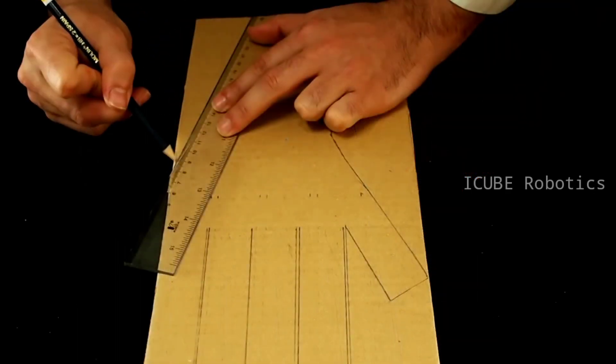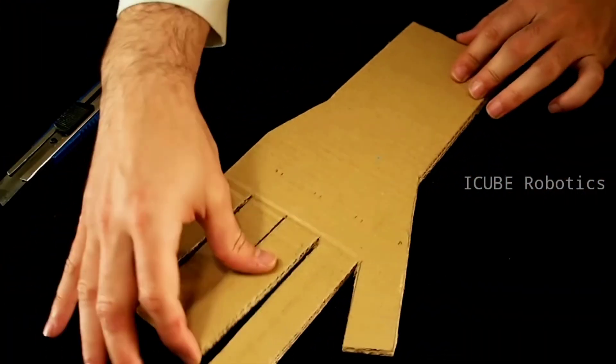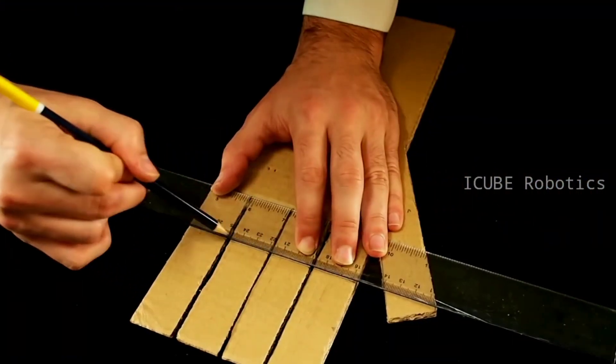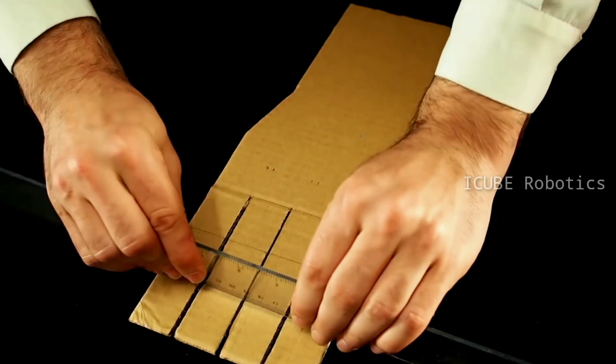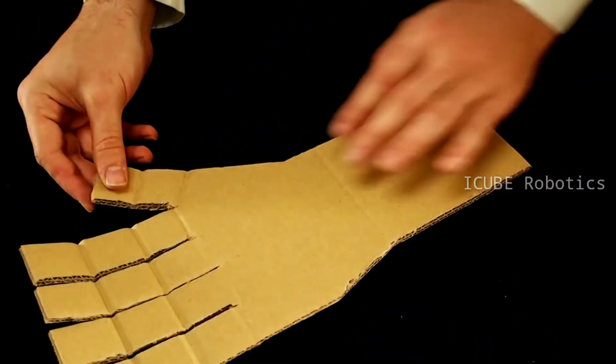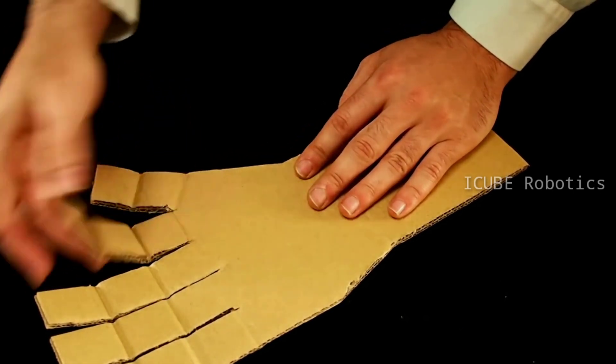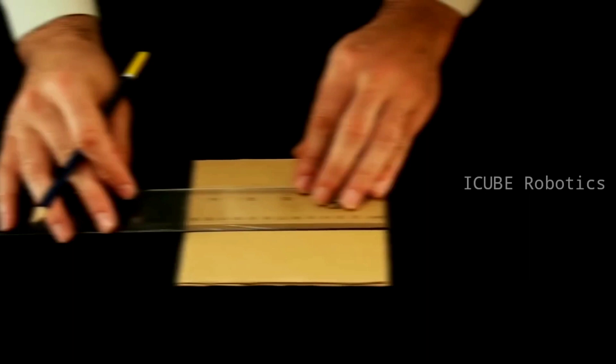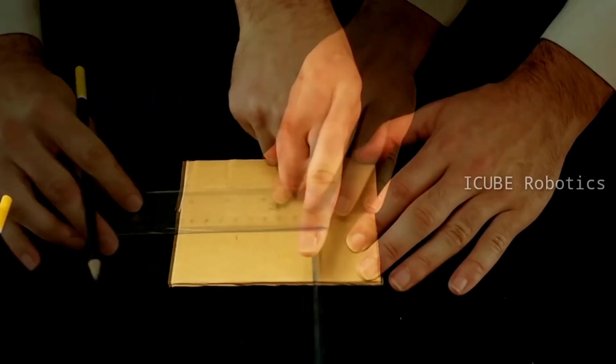Make a full hand-shaped structure. Cut it as shown in the video, and finally you will end up with a structure like this. Now mark it with the scale and pencil and make a small fold like this.